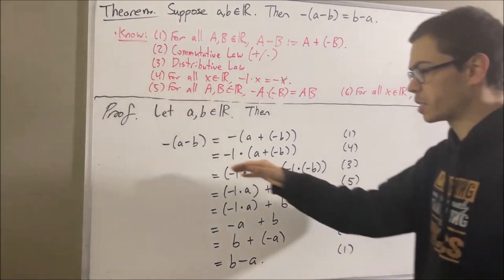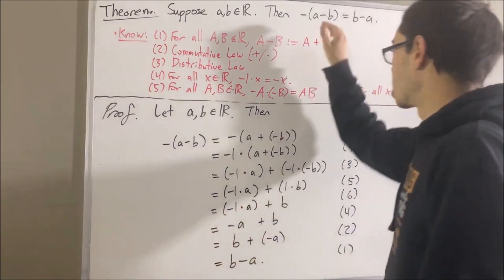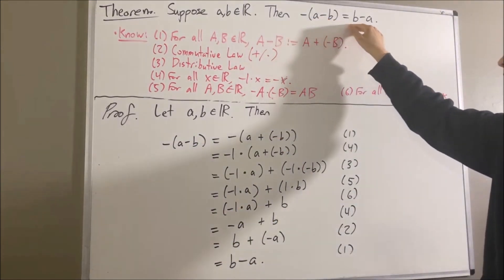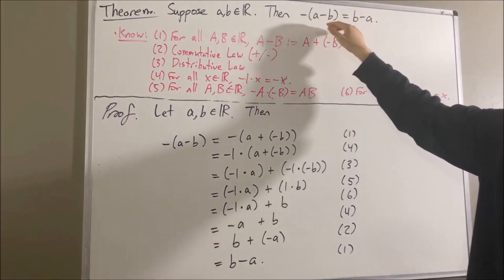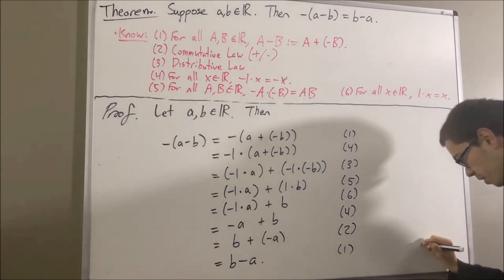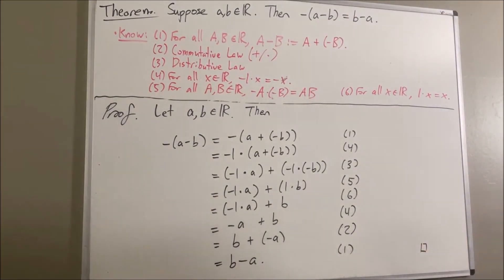So, as you can see, we've established a chain of equalities showing that the negative of A minus B is equal to B minus A. And that's exactly what we wanted to prove. So, this completes the proof. And that's pretty much it for this video.